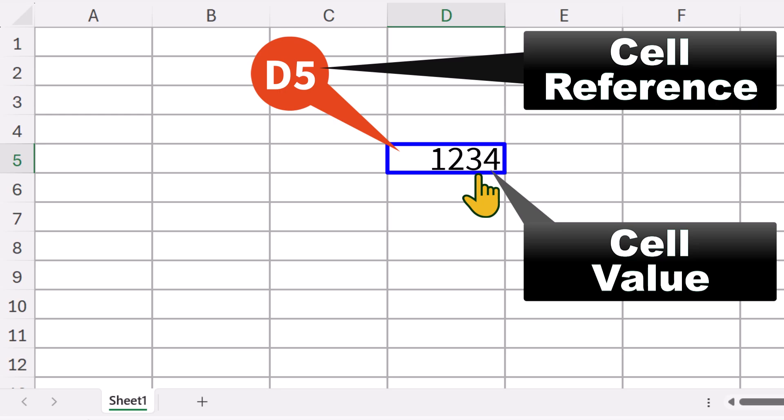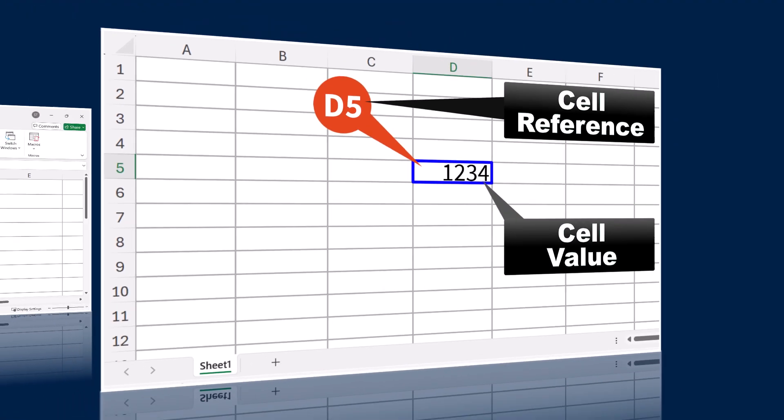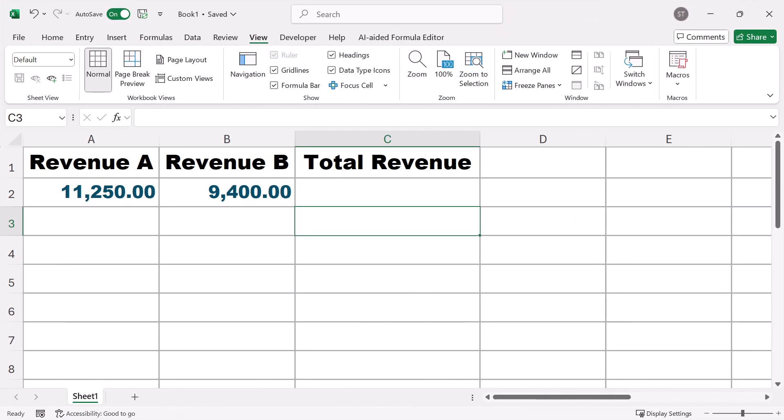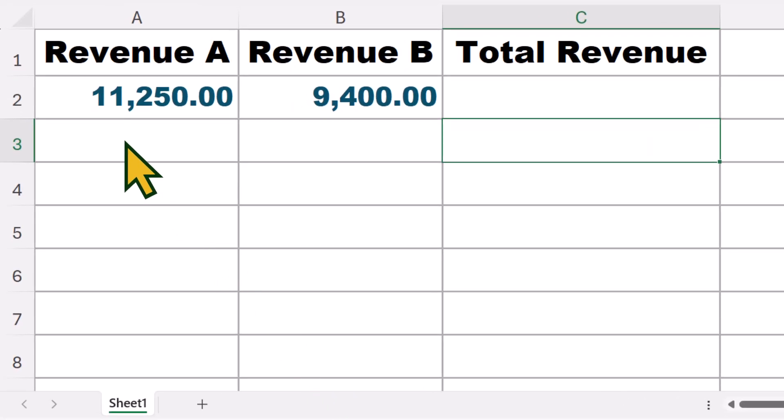Great. Now that you know what cell references and cell values are, let's now see how cell references are used as variables in Excel. In Excel, you'll often need to calculate numbers or values. But no matter how simple or complex the calculation is, you should never use cell values. Example, suppose I want to add revenue A and revenue B to get the total revenue here. If I type the cell values directly like this, sure, I get the total. But here's the problem. If either of those numbers are updated later, my total won't update. It'll just stay stuck on the old result, and that is wrong.